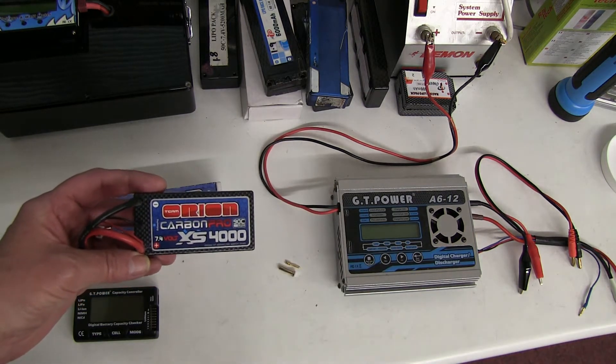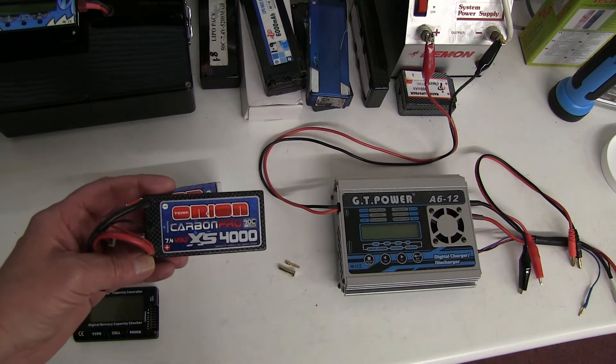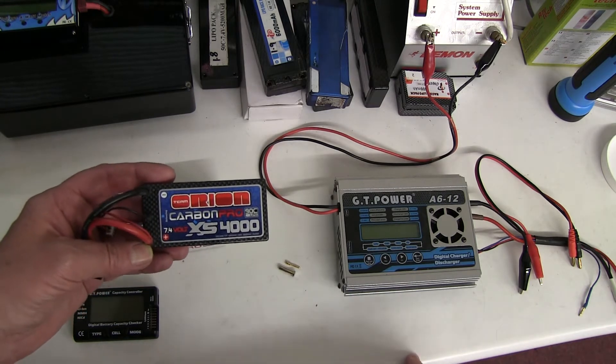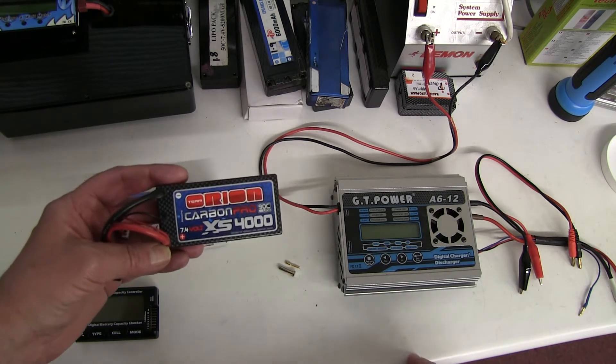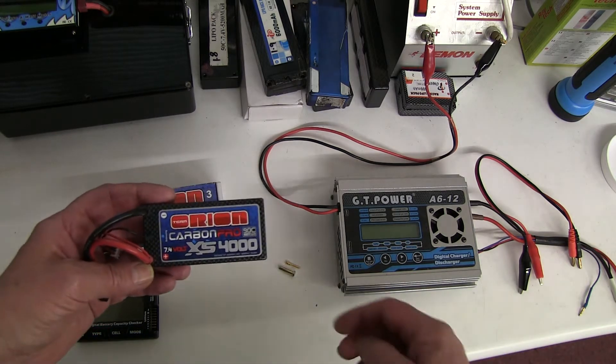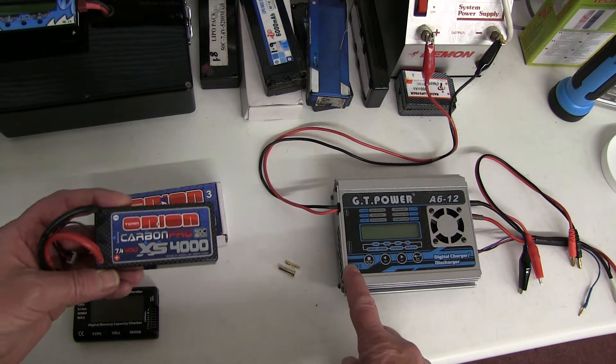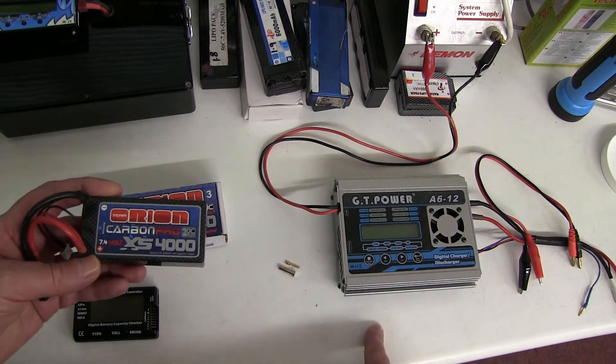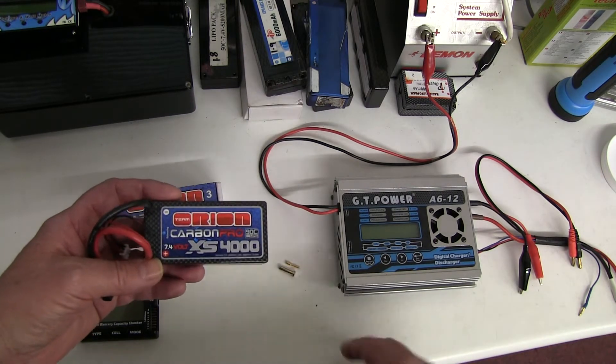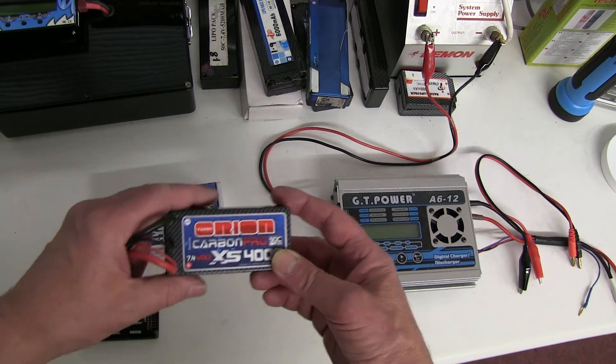If one cell is out of balance with the other, the charger tries to balance it up. So if one is at higher voltage, what the charger does is start discharging that one for a little while, bringing the voltage down, and charging them both up. But most cheap chargers, well even some expensive ones, only discharge at 100 milliamps or 0.1 of an amp.